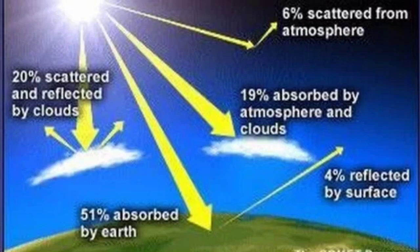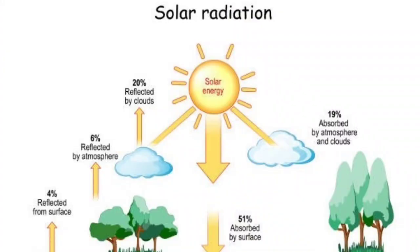The remaining 65 units are absorbed by the atmosphere and by the Earth's surface. Out of that, 14 units of the 65 units of insolation are absorbed by the solid and liquid particles present in the atmosphere, as short waves of insolation can be absorbed by solid and liquid particles. So the remaining 51 units reach the Earth's surface and are absorbed by it, heating it. In total, 51% of insolation is absorbed by the Earth's surface and only 14% is absorbed by the atmosphere, which is why the atmosphere is said to be almost transparent to incoming solar radiation.